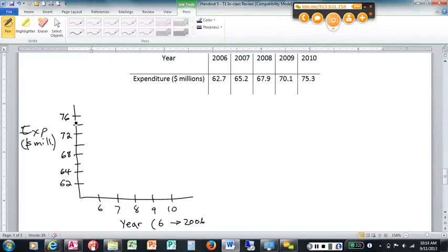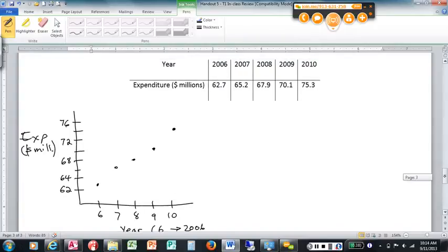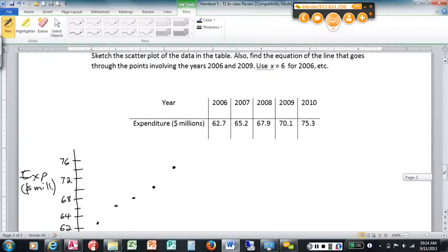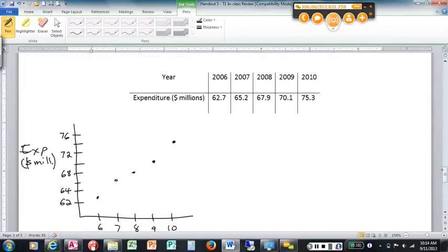Alright. So 6 is 62.7, 7 is 65.2, 8 is 67.9, 9, 70.1, and 10 is 75.2. So there's our scatterplot. We want to do a line, though, also through the points involving the years 2006 and 2009. So these two points right here, let's sketch a line through those.